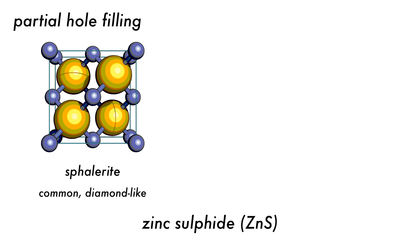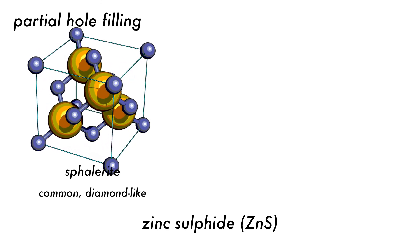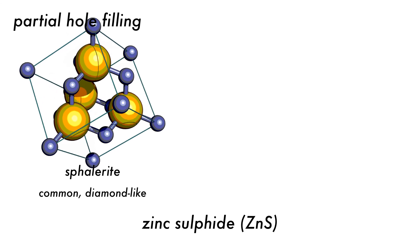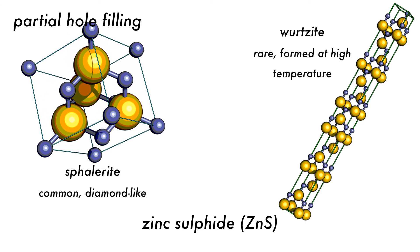In the previous example, all the tetrahedral holes were filled. But what happens if we only have partial filling? This is the case with zinc sulfide, which has 2 forms: the common sphalerite, with the same arrangement as diamond, and the rarer wurtzite, that is formed at higher temperatures.